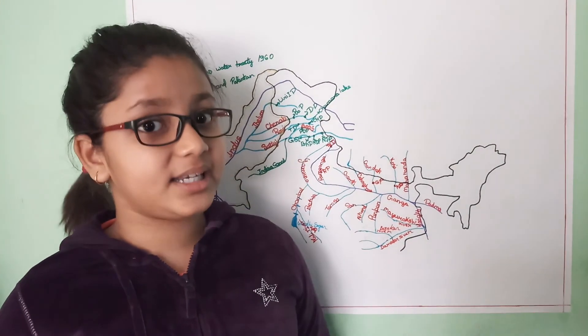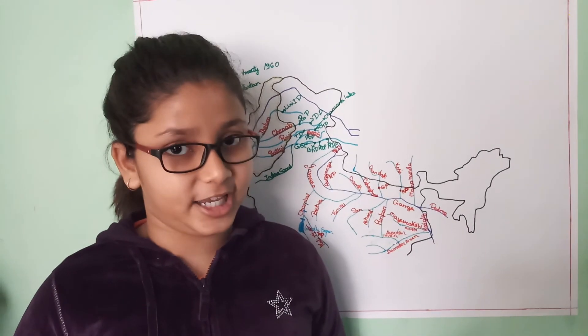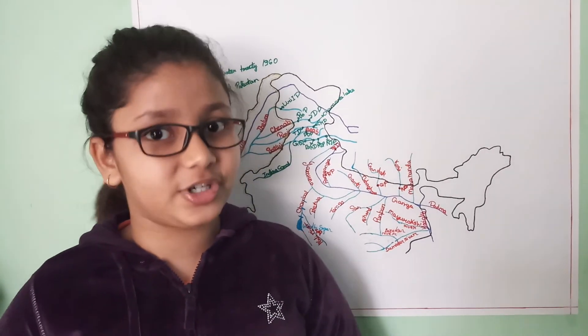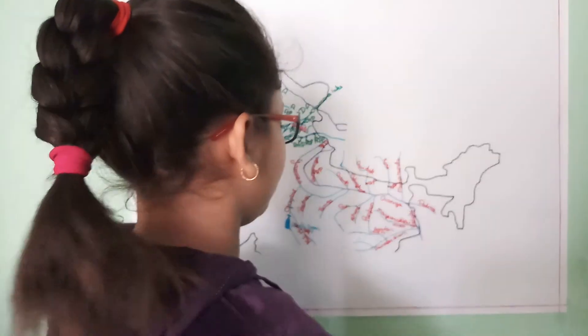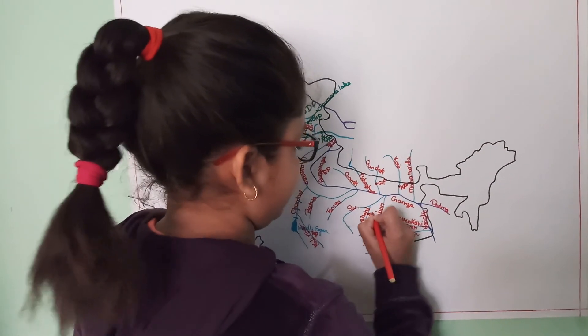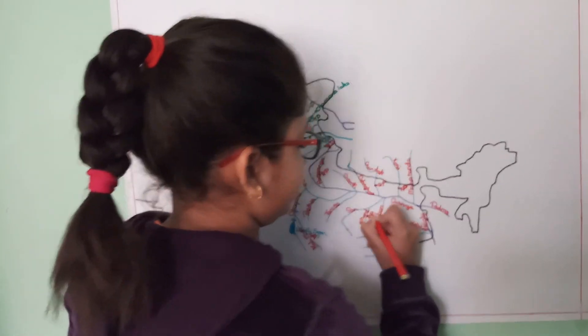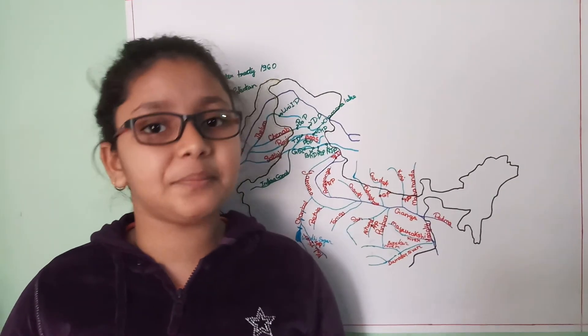Then comes the Rihand project. It is constructed in Uttar Pradesh on the Rihand river, a tributary of the Son river.